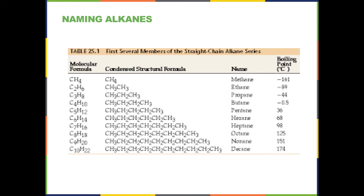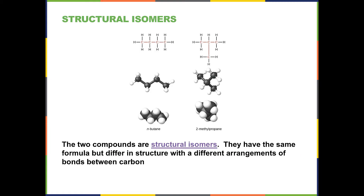If two compounds have the same formula but different structures, they're called structural isomers. They have the same formula but their structure is different — there is a different arrangement of the carbon-hydrogen bonding. For example, butane has four carbons in a straight chain, while two-methylpropane has the same number of carbons and hydrogens as butane but is put together in a different way, making them structural isomers.